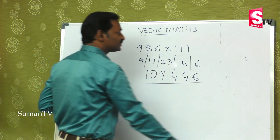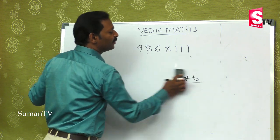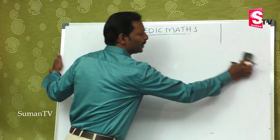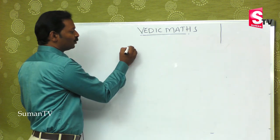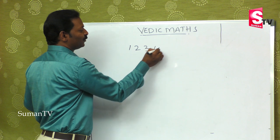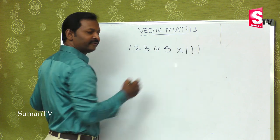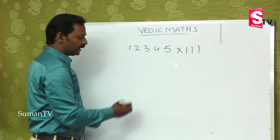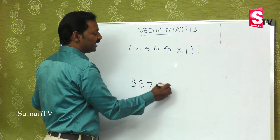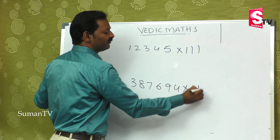As we did bigger numbers with 11, now a bigger number like 12345 multiplied by 111, and also 387694 multiplied by 11.